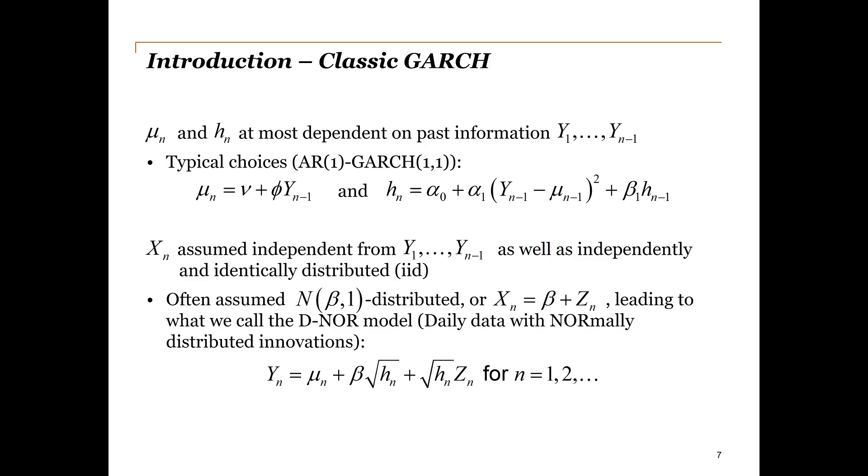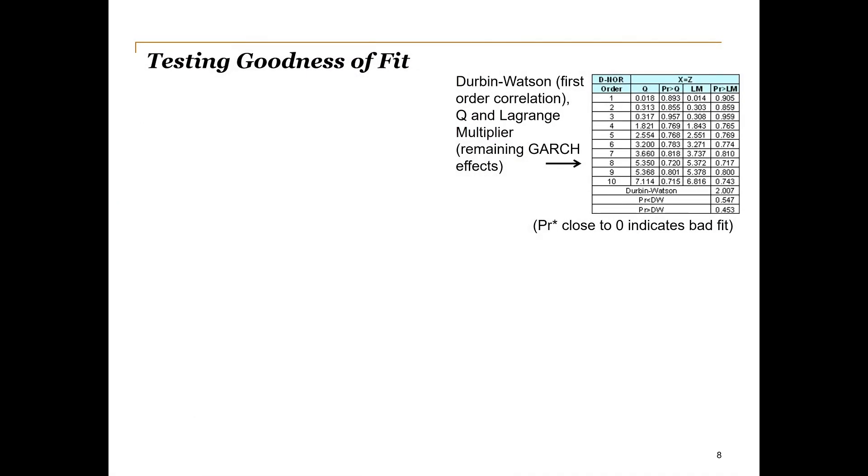The Durbin-Watson statistic will be used to check for first-order autocorrelation, while the Q and Lagrange multiplier tests will indicate whether there are any remaining GARCH effects to be catered for. Probabilities in the order of 5% or less indicate remaining effects. As an example, we see that the daily normal model fitted to data generated by the same process fits well, as expected.